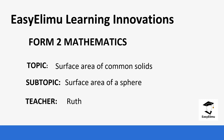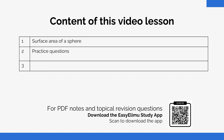Welcome to EZLM Learning Simplified. My name is Ruth and today we are going to be learning Year 2 Mathematics. Our topic for today is surface area of common solids. We are going to look at the surface area of a sphere and how we calculate it, and then also mention how we calculate the surface area of a hemisphere — which is half of a sphere — although the formula is going to be slightly different; it's not going to be simply half of the sphere formula.